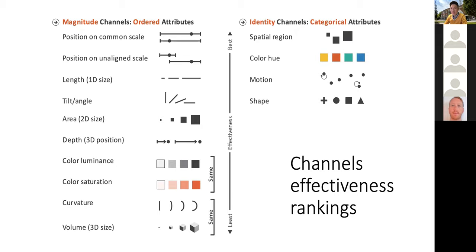Other channels include area. Looking at the list of possible channels — this is not an exhaustive list but includes the most common ones — on the left we have channels used to represent quantitative or ordered values, and on the right are channels used to represent categorical attributes. These channels are ordered based on their effectiveness, with the most effective at the top.